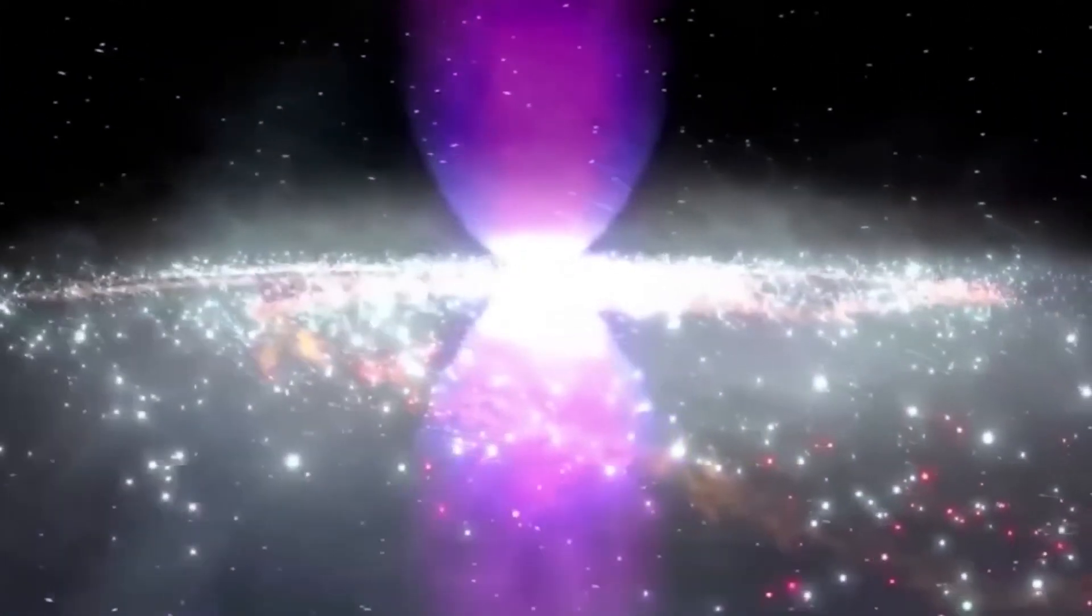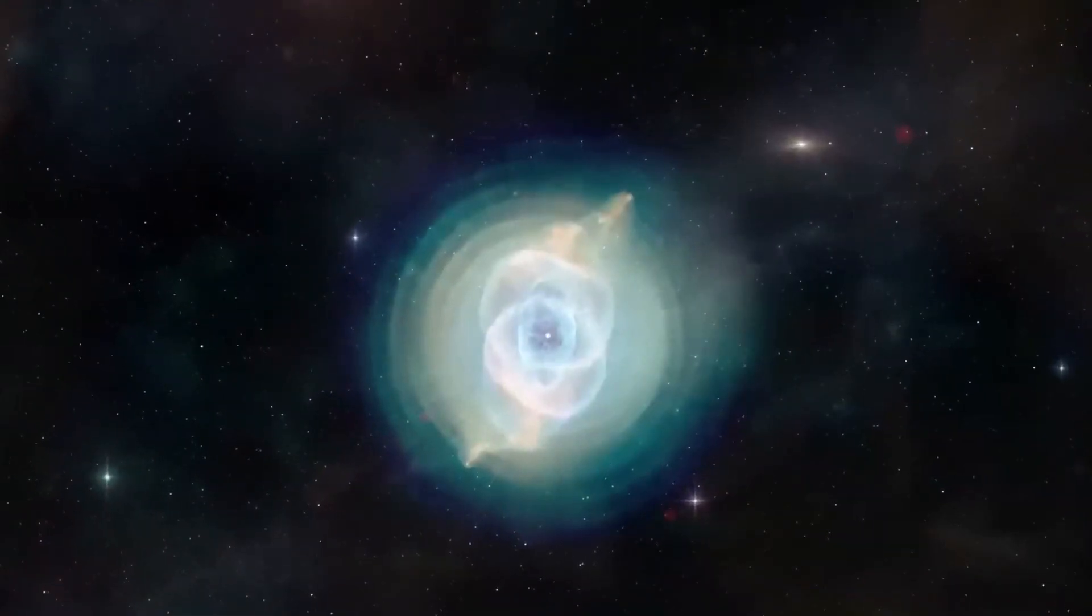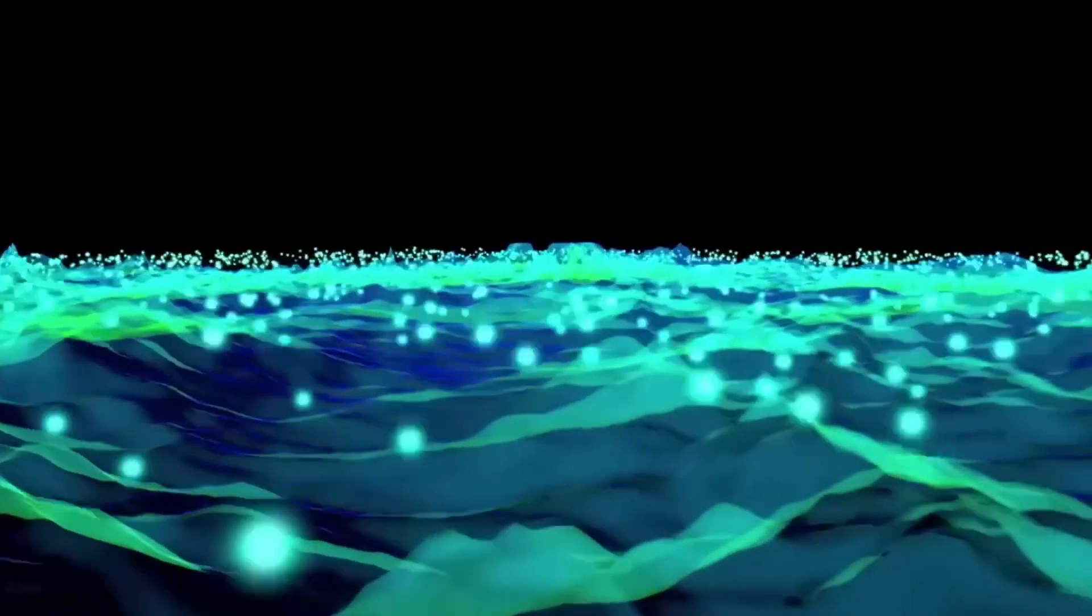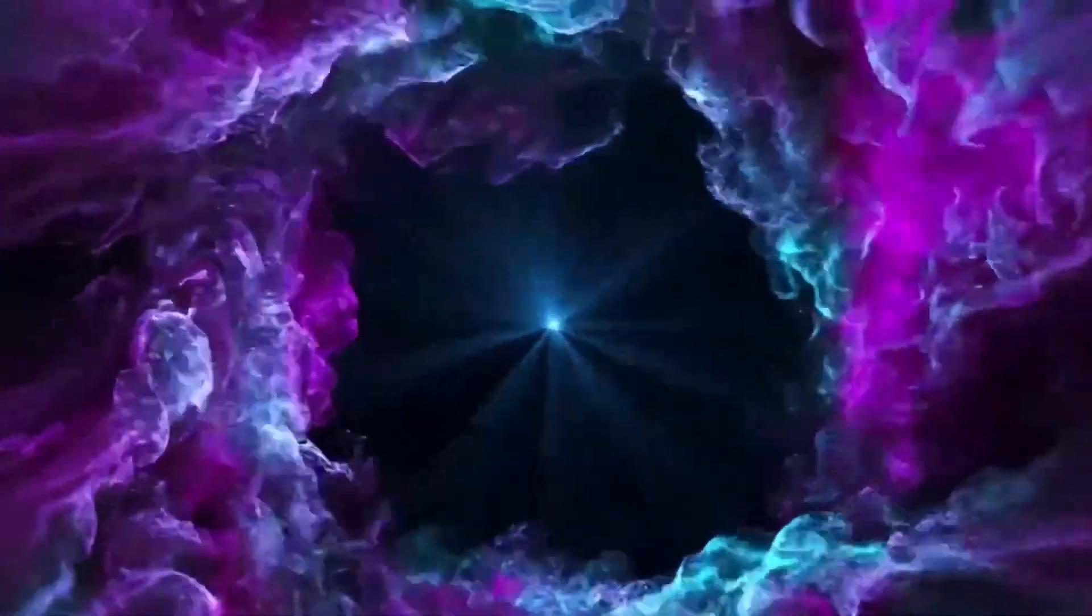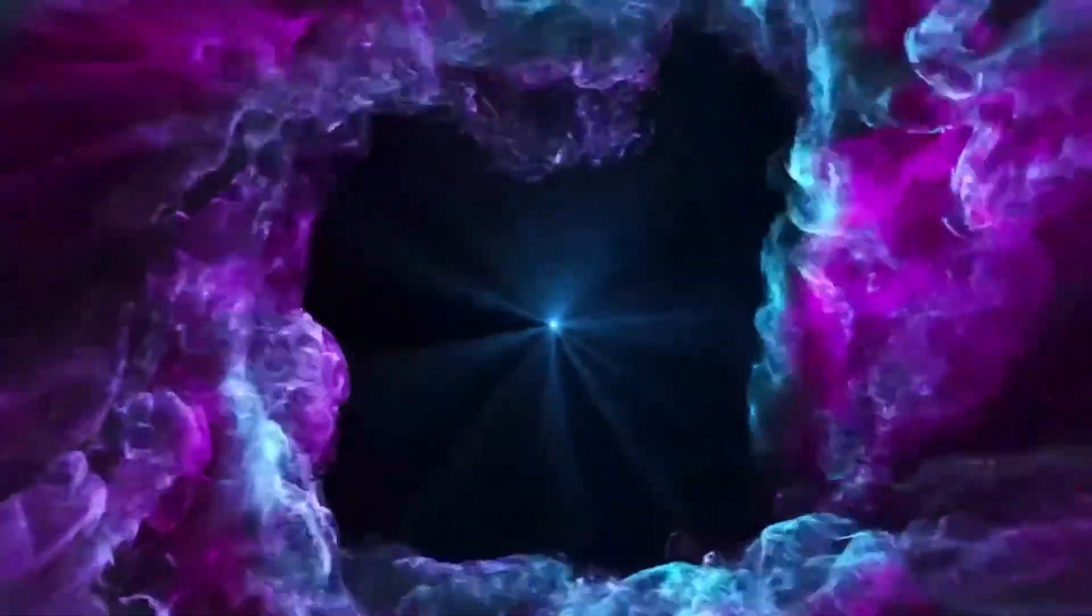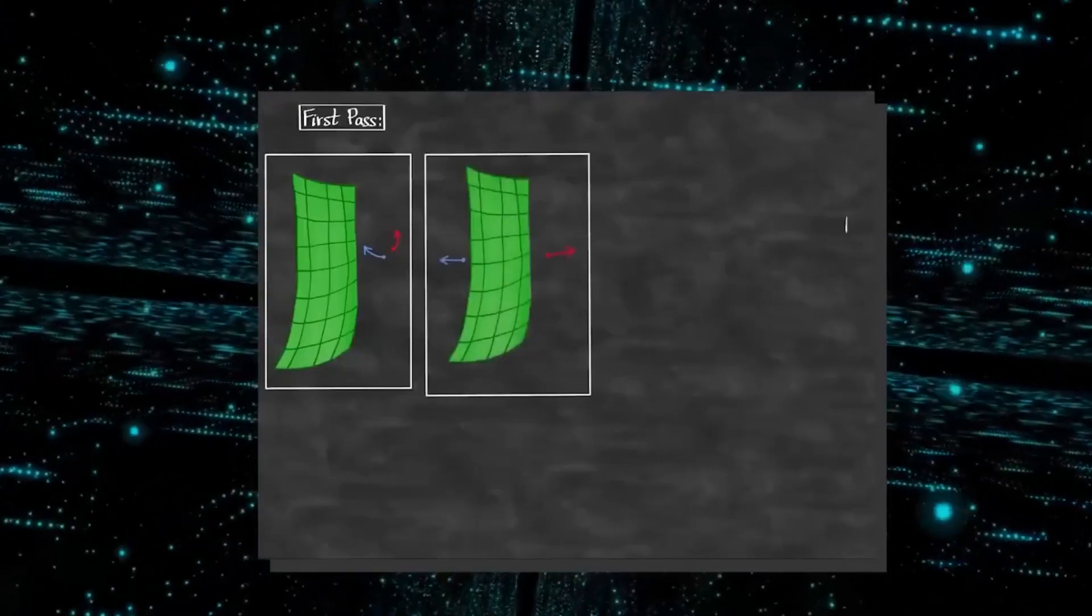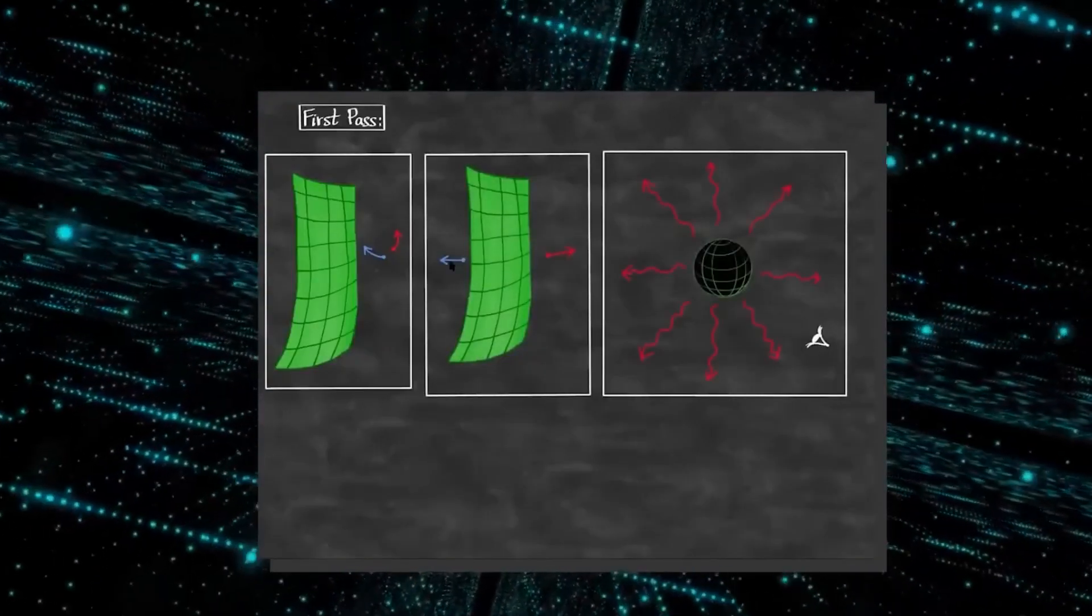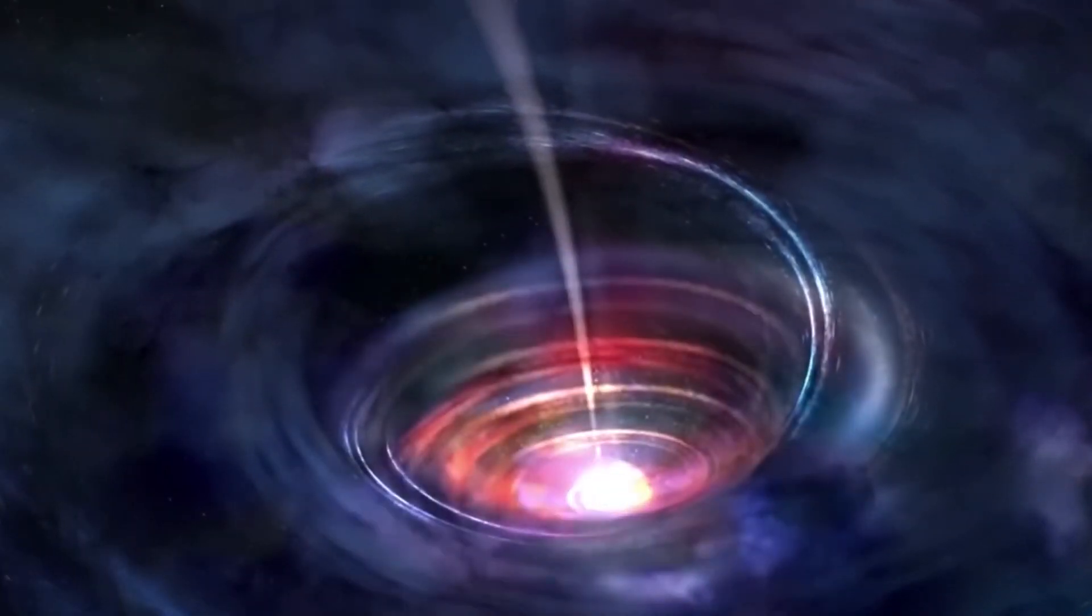In conclusion, the recent discovery of the corona inside Gargantua represents a major breakthrough in our understanding of black holes. By analyzing the X-rays emitted by gas falling into the black hole, researchers were able to create a detailed 3D model of the accretion disk and observe the presence of the corona hovering above it. This discovery has important implications for our understanding of how black holes form and evolve over time, and is just the latest in a series of groundbreaking discoveries about these enigmatic objects.